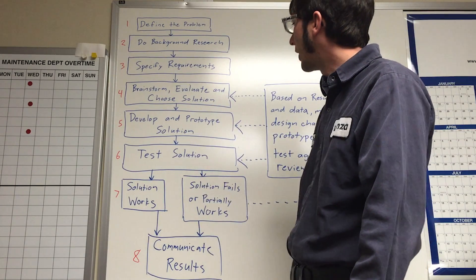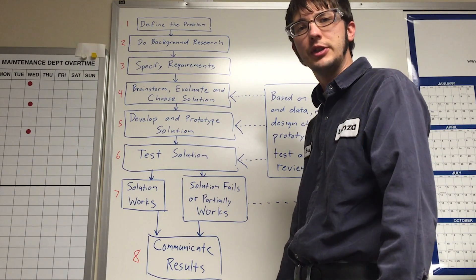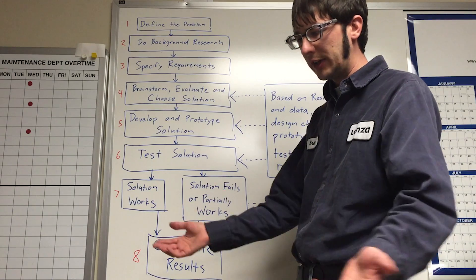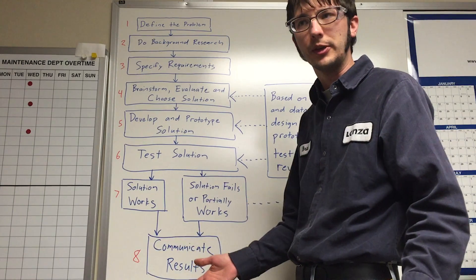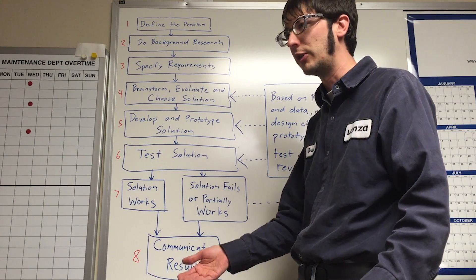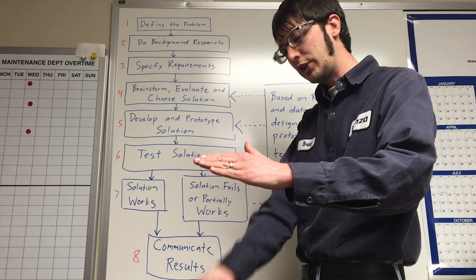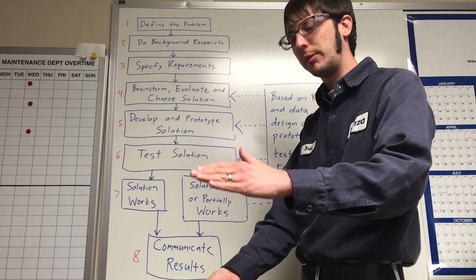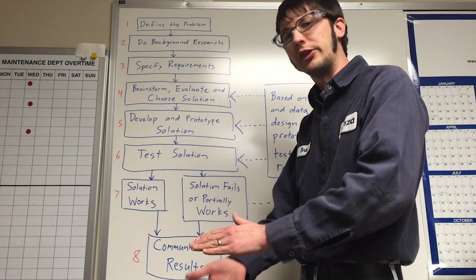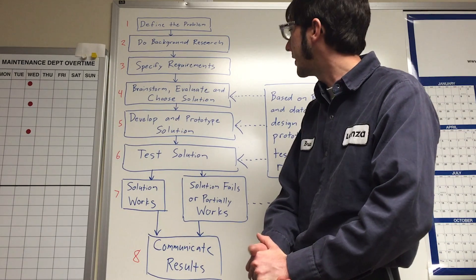Step four: brainstorm, evaluate and choose the solution. So you come up with a whole list, involve several team members from the site, everybody who needs to be involved to list out root causes of what could be causing the problem, how to fix those root causes and what to go after in order to fix the situation.